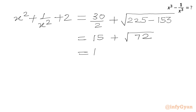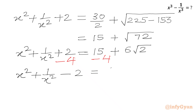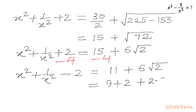So 30 over 2 is 15, plus square root of 225 minus 153 which is 72. We can write 72 as 36 times 2, so square root of 72 is 6 root 2. Therefore x square plus 1 over x square plus 2 equals 15 plus 6 root 2. Now we subtract 4 from both sides, so 2 minus 4 is minus 2, giving us x square plus 1 over x square minus 2 equals 11 plus 6 square root 2.